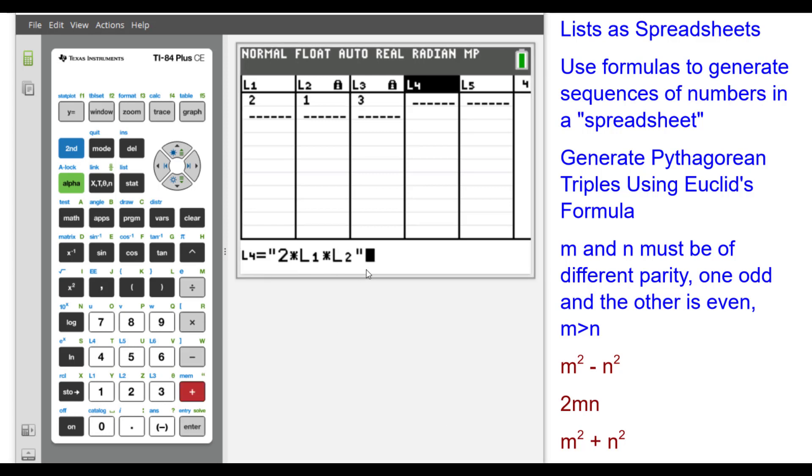In list L4, I'm going to put 2 times M times N, but I'm using L1 and L2. Again, notice the quotes so that it locks it.